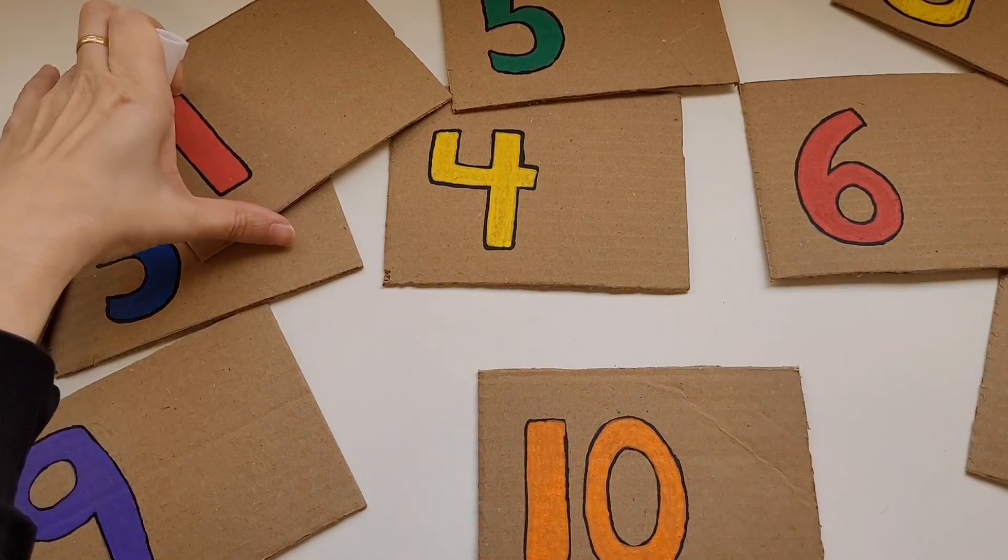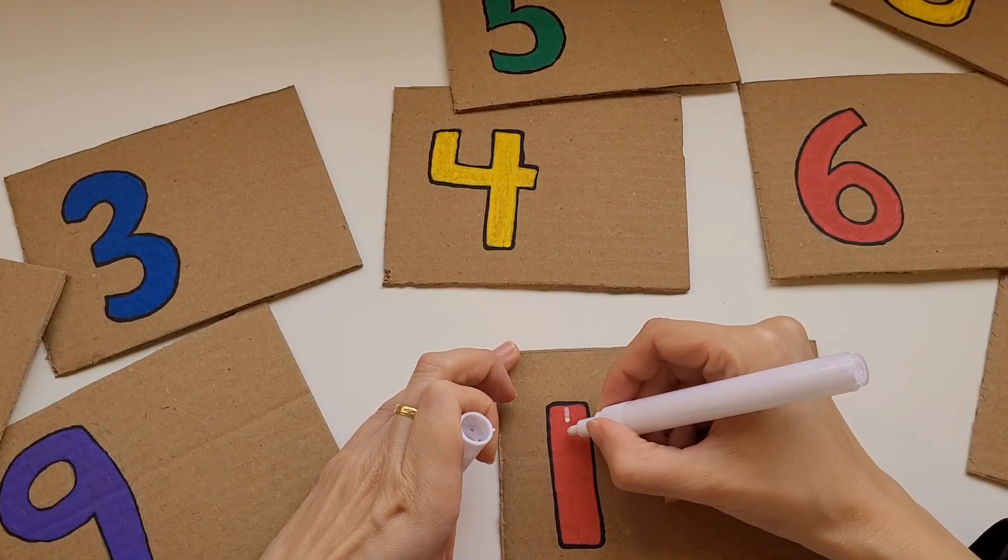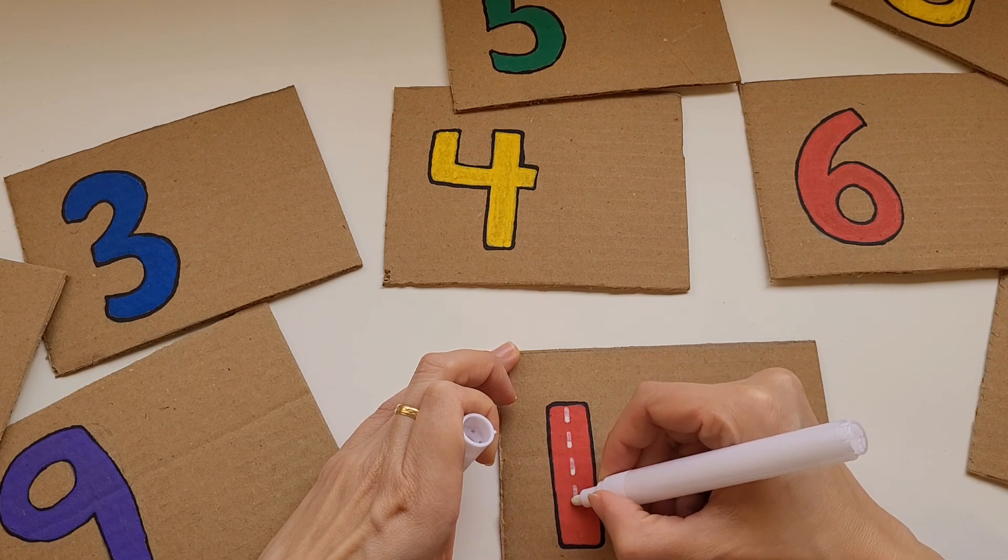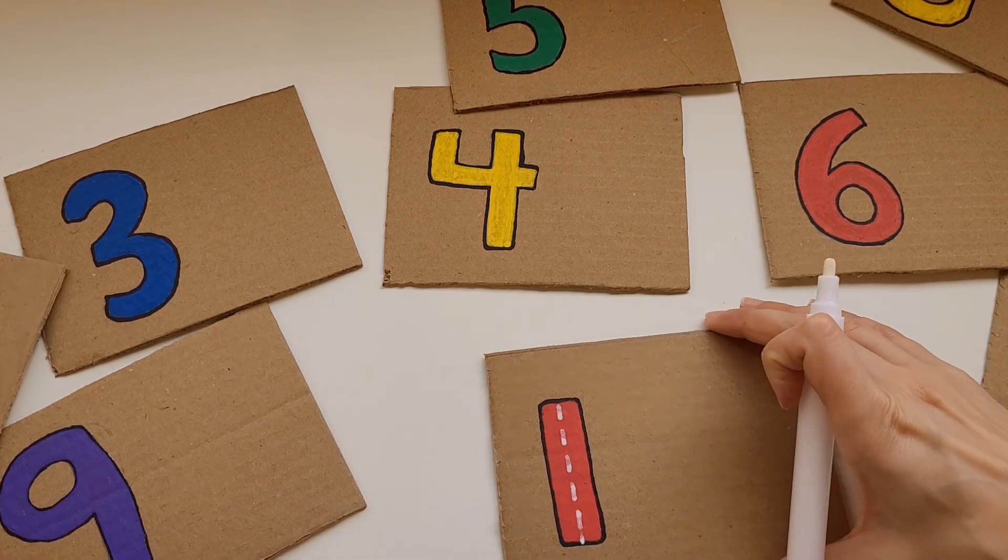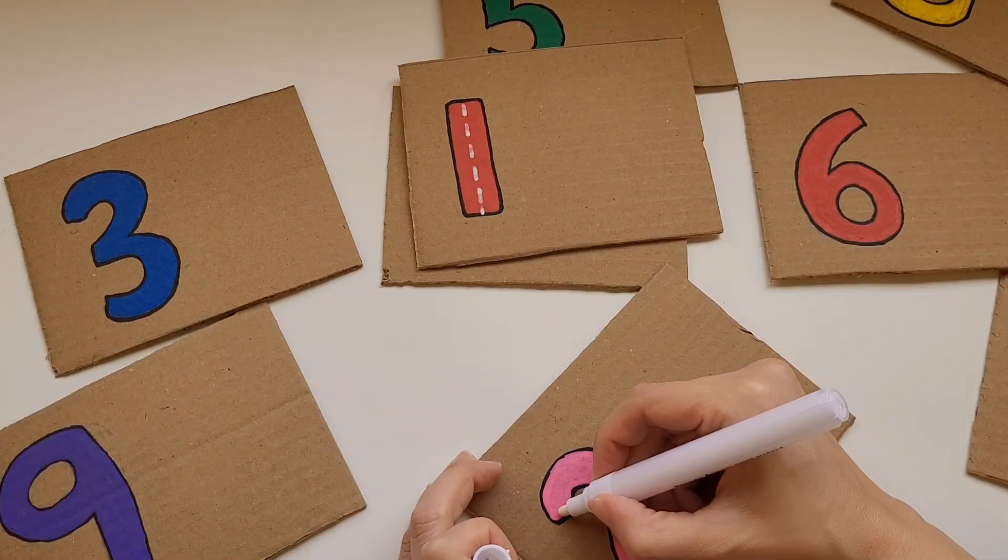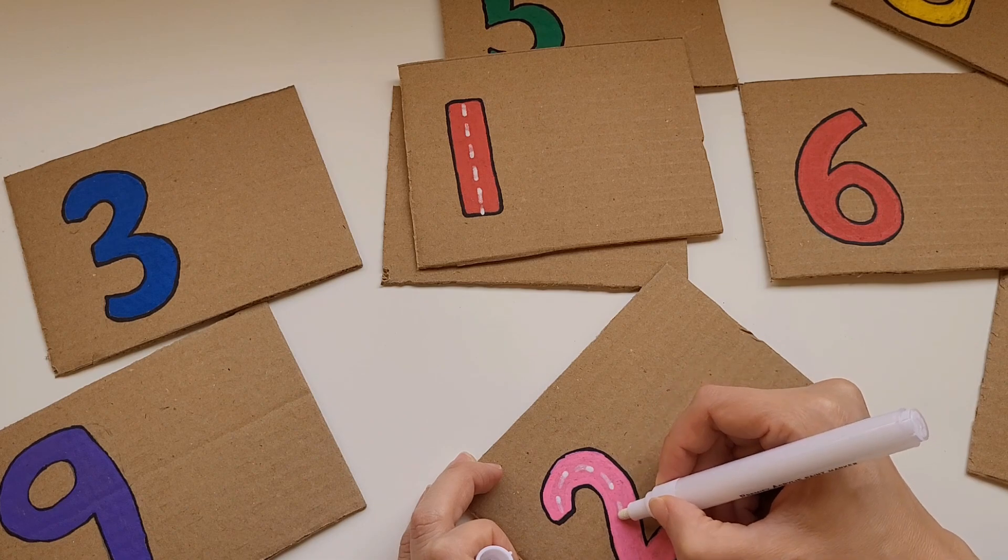After coloring in all the numbers, I'm going to use a white marker to make some tracing dots. This way, the child will be able to trace in a specific area and it will make it easier for them to learn how to write the numbers by following the little dots.